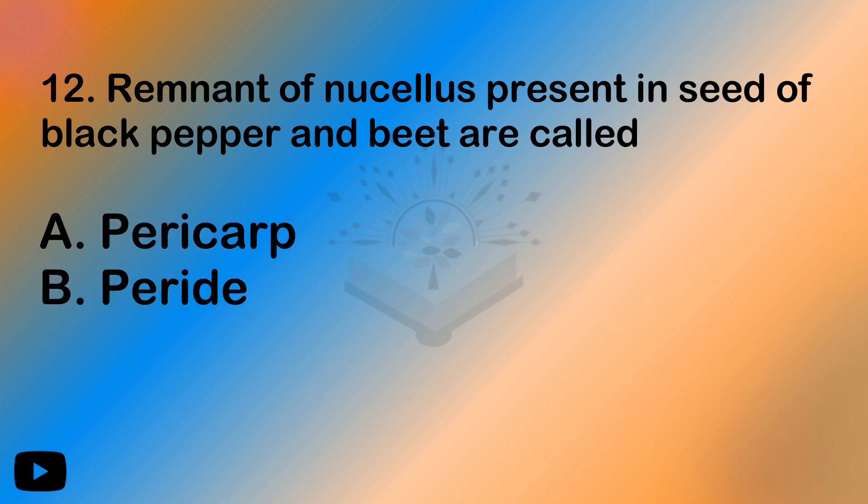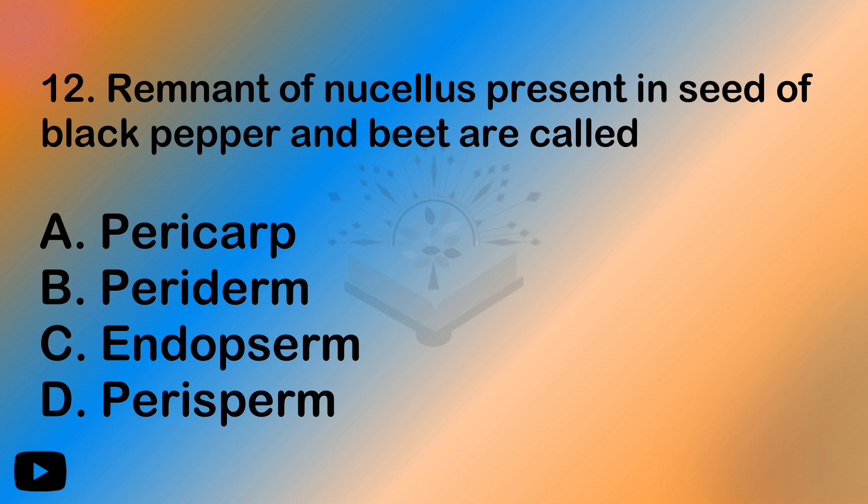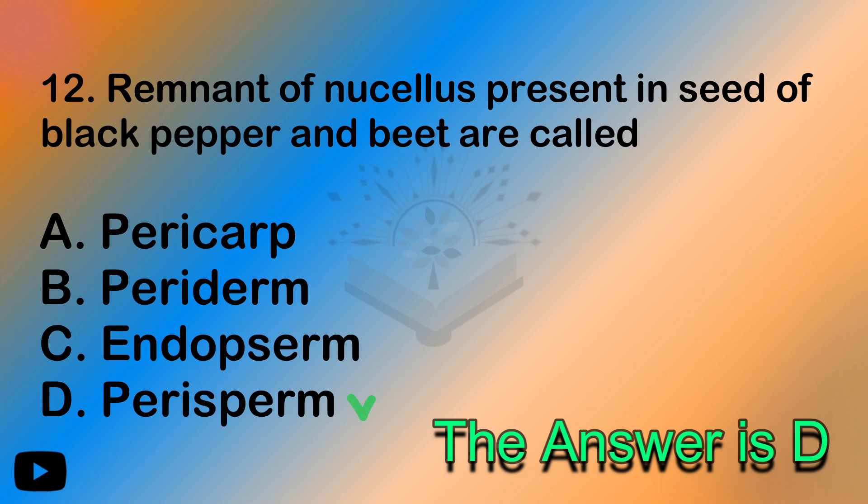Remnant of nucellus is present in the seed of black pepper and beet. If you have a remnant question, the word is perisperm — you have two examples in NCERT: black pepper and beet. If you have a question asking what is perisperm, the answer is black pepper and beet.